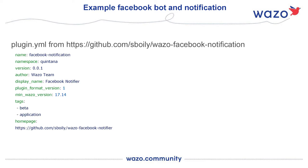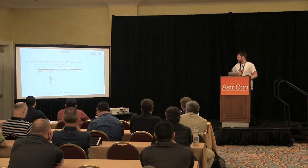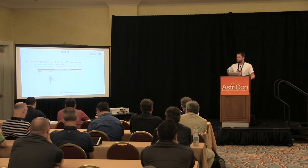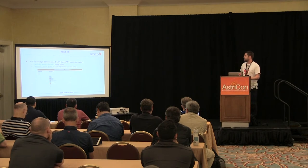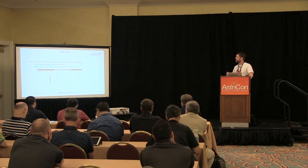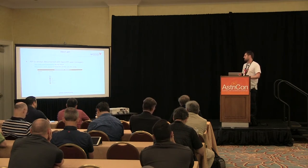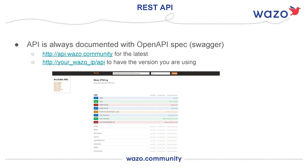In WAZO, like I said, we have many REST APIs. REST API is really important for us because when we create a new feature, we already have a new REST API. We use the OpenAPI spec — it was called Swagger before they merged the project. We have all of our documentation at API.wazo.community, which has the latest documentation. But if you want to see what version you have, you only need to use the /api path on your WAZO server and you can see the REST API.